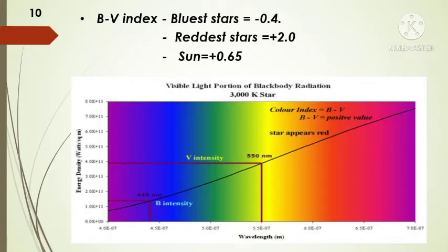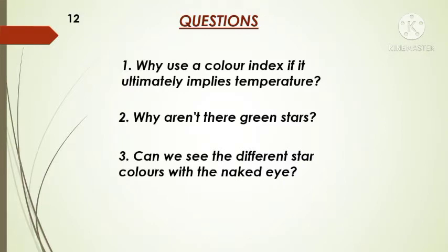Now we can discuss some set of questions from this portion. The first question is: Why use a color index if it ultimately implies temperature? Because the brightness of a star through a filter is what astronomers actually measure, and we are always more comfortable when our statements have to do with measurable quantities. The second question is: Why aren't there green stars? There are green stars, but because their emission peak is exactly in the middle of the visible range, they are perceived as white. And remember, no stars emit light of a single wavelength.